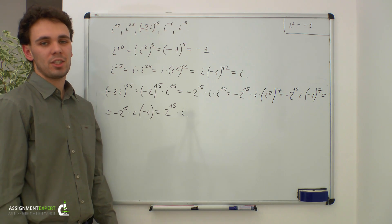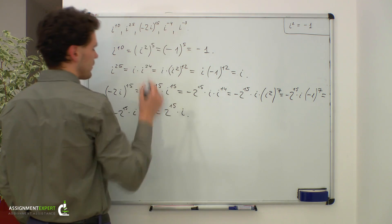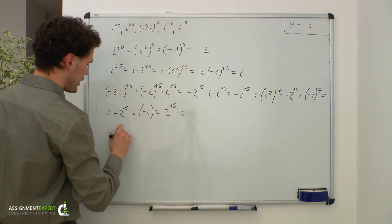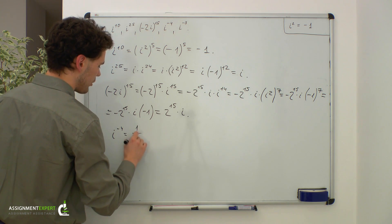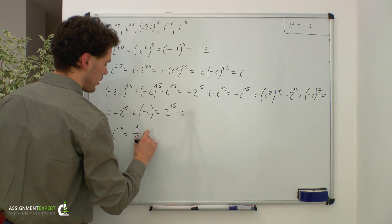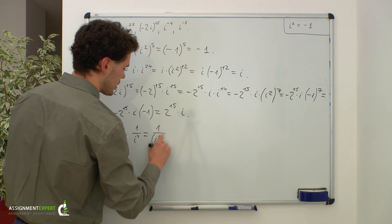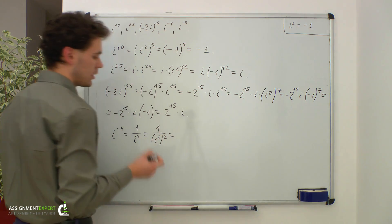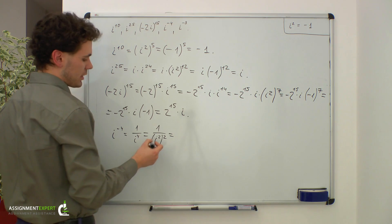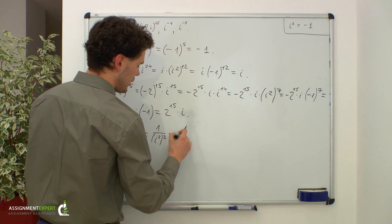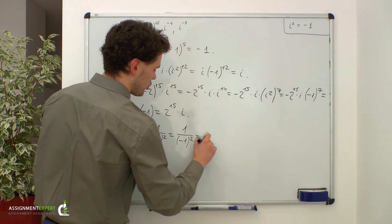Now let's consider negative powers of i and begin with an even power. i raised to the negative 4th power is equal to 1 over i raised to the 4th power. This is equal to 1 over i squared squared. Once again we substitute negative 1 instead of i squared and we get 1 over negative 1 squared, and this is equal to 1.